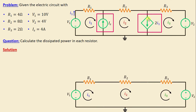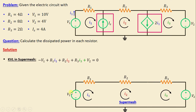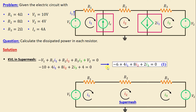Then we obtain our super mesh. By applying KVL in the super mesh we can write: negative V1 plus R1·I1 plus R2·I2 plus R3·I3 plus V2 equals 0. Replacing the resistors with their numerical values: negative 10 plus 4·I1 plus 8·I2 plus 2·I3 plus 4 equals 0. Simplifying, we get negative 6 plus 4·I1 plus 8·I2 plus 2·I3 equals 0. I will call this equation 1. We currently have one equation with three unknowns, which means we require two additional equations to solve this problem.